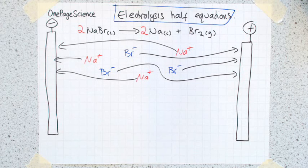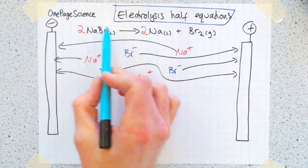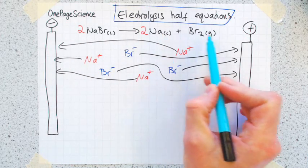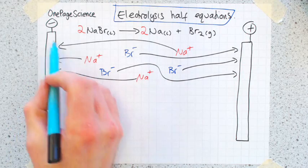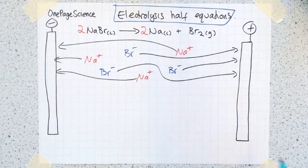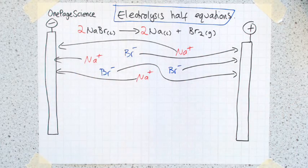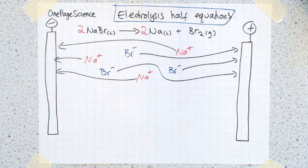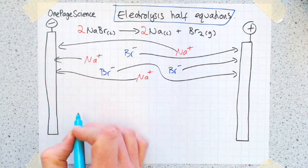So what's happening? You have to write these things called half equations. Basically, this is one chemical reaction happening here. Sodium bromide is turned into sodium and bromine, but there's actually two half reactions happening. There's one reaction happening at the negative electrode, and one reaction happening at the positive electrode. Overall, this is the reaction that's happening, but we do need to be able to represent these two half equations.